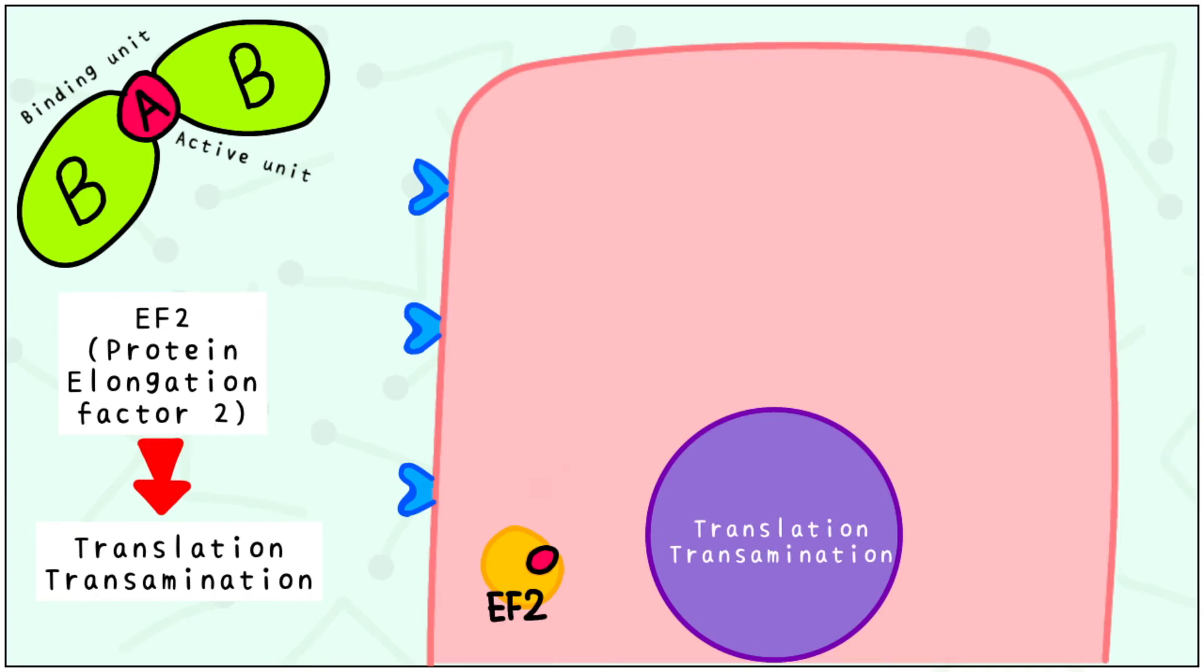Here, it irreversibly inhibits the protein elongation factor 2. We know that EF2 is essential for translation and transamination. Since the EF2 is bound to the A subunit, it is unable to perform its essential actions of translation and transamination.